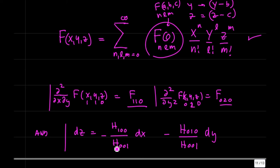And our implicit function theorem formula for dz then just becomes h one, zero, zero over h zero, zero, one dx minus the derivative with respect to y. So, h zero, one, zero over h zero, zero, one dy.